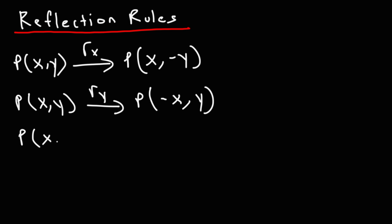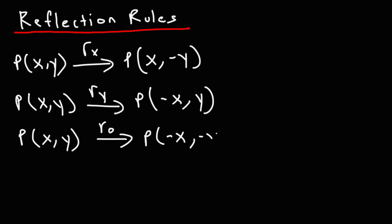Now if you want to reflect a point about the origin, you need to negate both x and y, so it becomes (negative x, negative y).